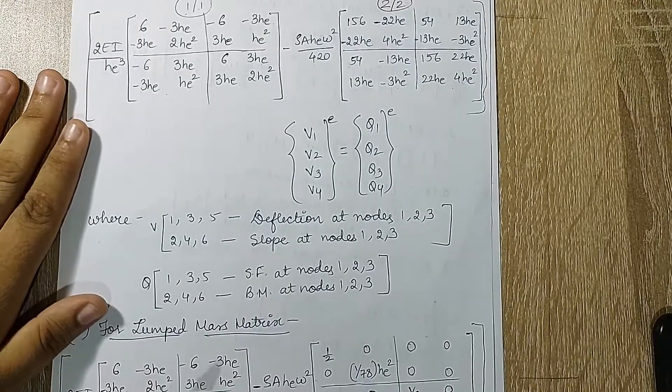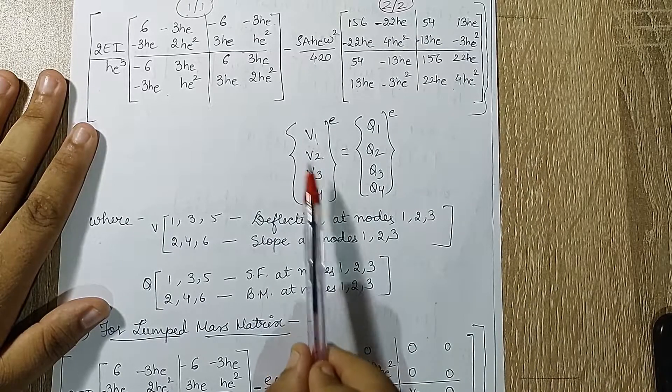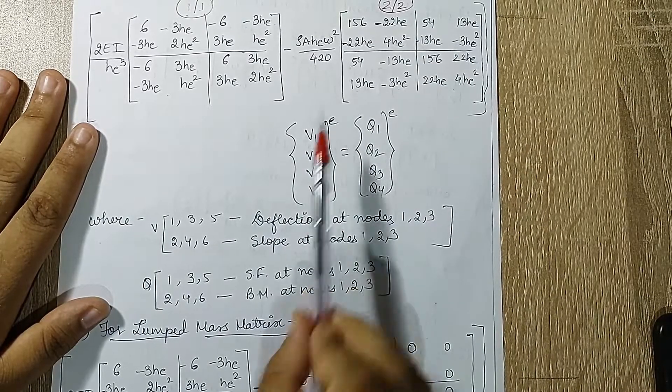Now here, this together with this, you have {v1, v2, v3, v4} raised to E as a common term.